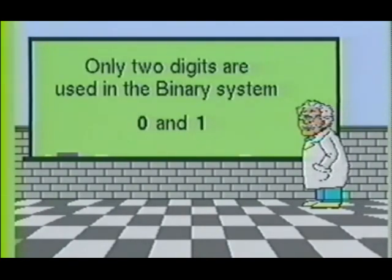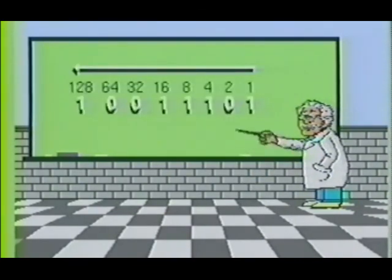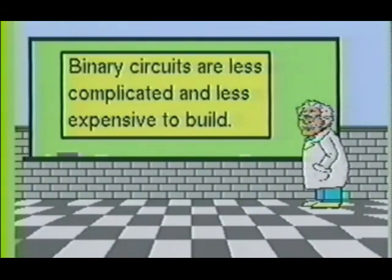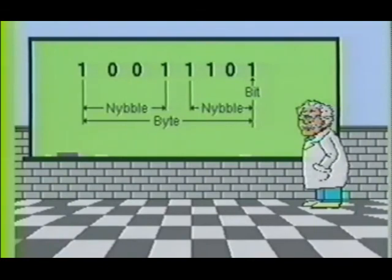The binary number system uses only two digits: 0 and 1. The weight of binary numbers is computed in powers of 2 — as numbers move to the left, they double in magnitude. Binary numbers are used in logic circuits primarily because the system is less costly to build. A single binary digit is referred to as a bit; four bits are known as a nibble, and two nibbles form a byte.